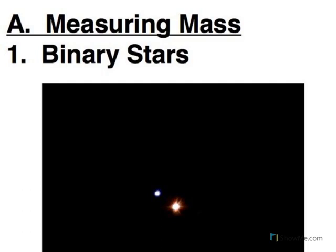In the case of stars, we can't see planets, they're too small. But we can see other stars. And if we have two stars that orbit each other, then we've got something that we can use.